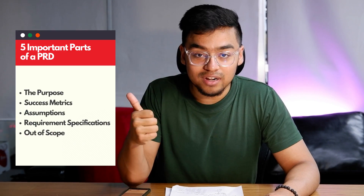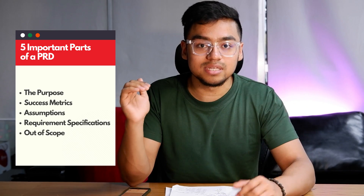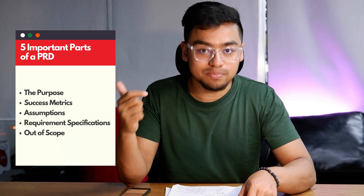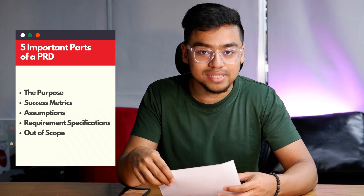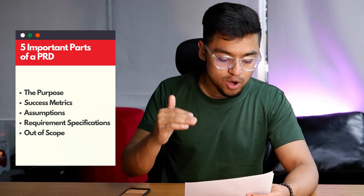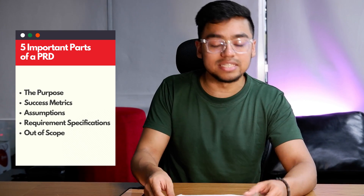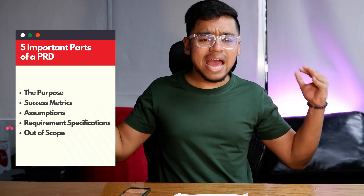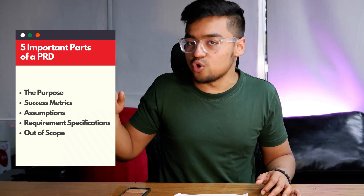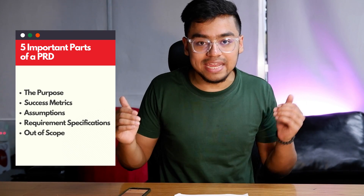There are five important parts of a PRD. The first is the purpose. Number two is metrics. Number three is assumptions. Number four is requirement specifications. Number five is out of scope. I'm going to go through each one of these parts and describe what should be included in them.